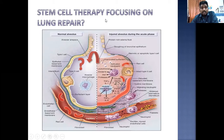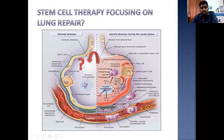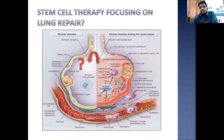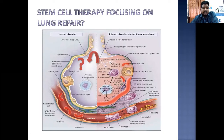Now we focus on how stem cell therapy can be applied for lung repair. In ARDS, the alveolus gets injured — there is an inflammatory cascade, damage to alveolar epithelial cells including type 1 and type 2 epithelial cells, with major damage to type 1 cells. There is accumulation of exudate inside the alveolus, which impairs gas exchange and leads to severe hypoxemia. All these events occur during lung injury in ARDS.